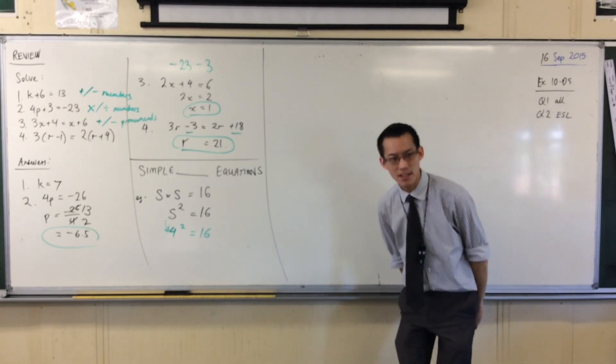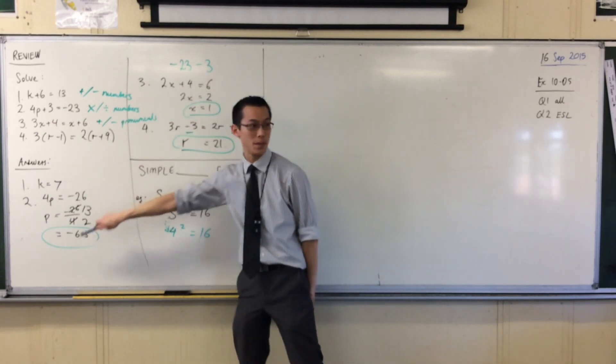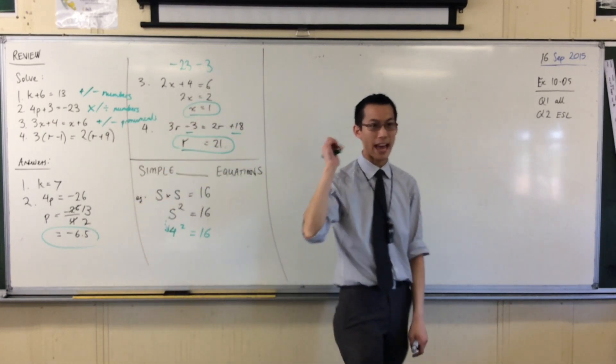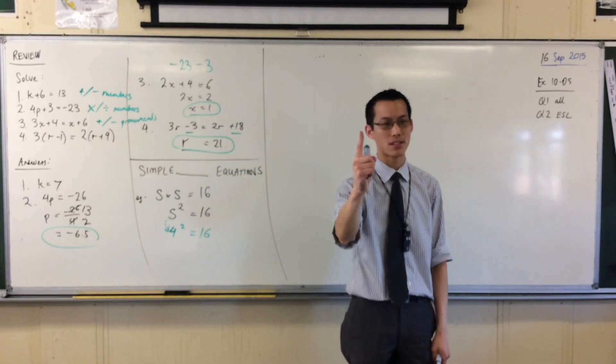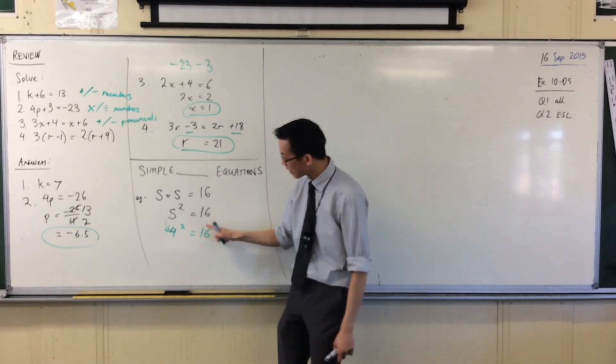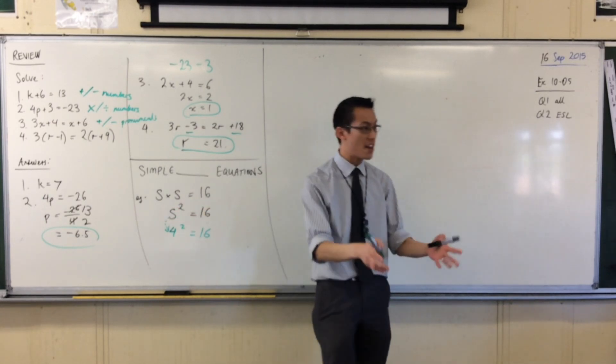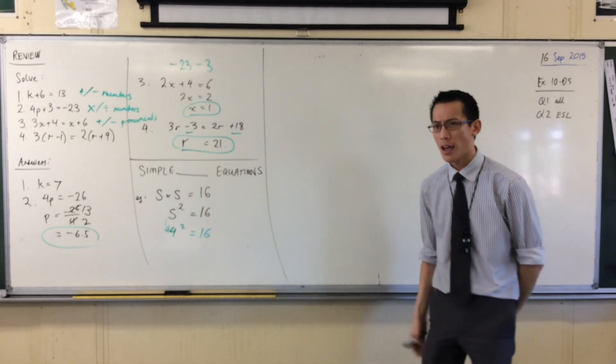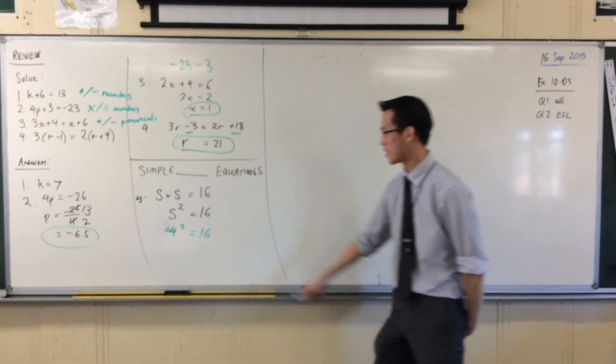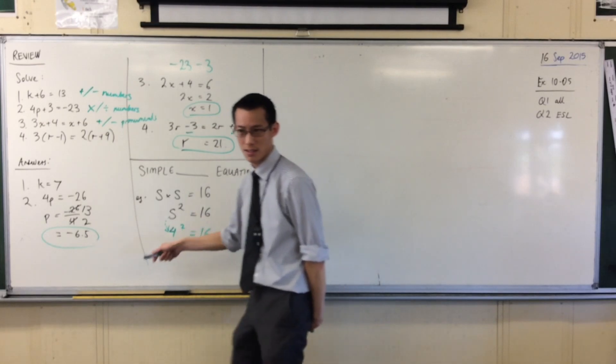But there's something a bit sneaky going on here. Unlike every other question we've been doing, where when you solve it, there's a solution, one solution. There's actually another number that I can put in, I can substitute it, I can swap it out for S, and it will still work. It will still be a solution. Can anyone think of another number that I can square, and it'll give me 16?